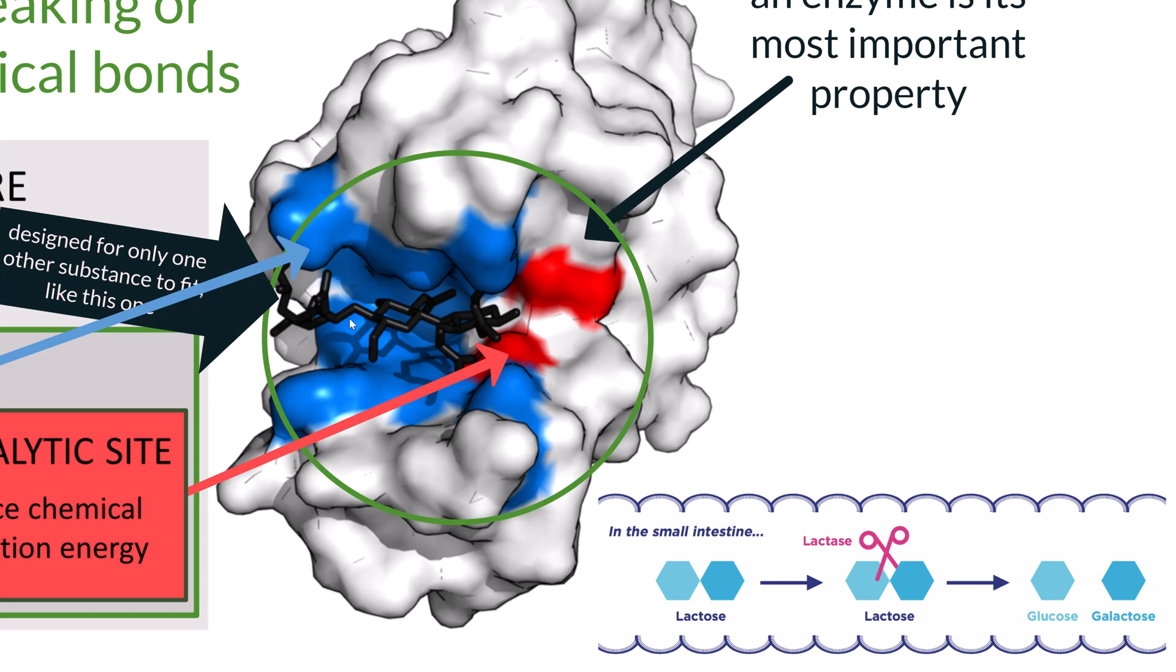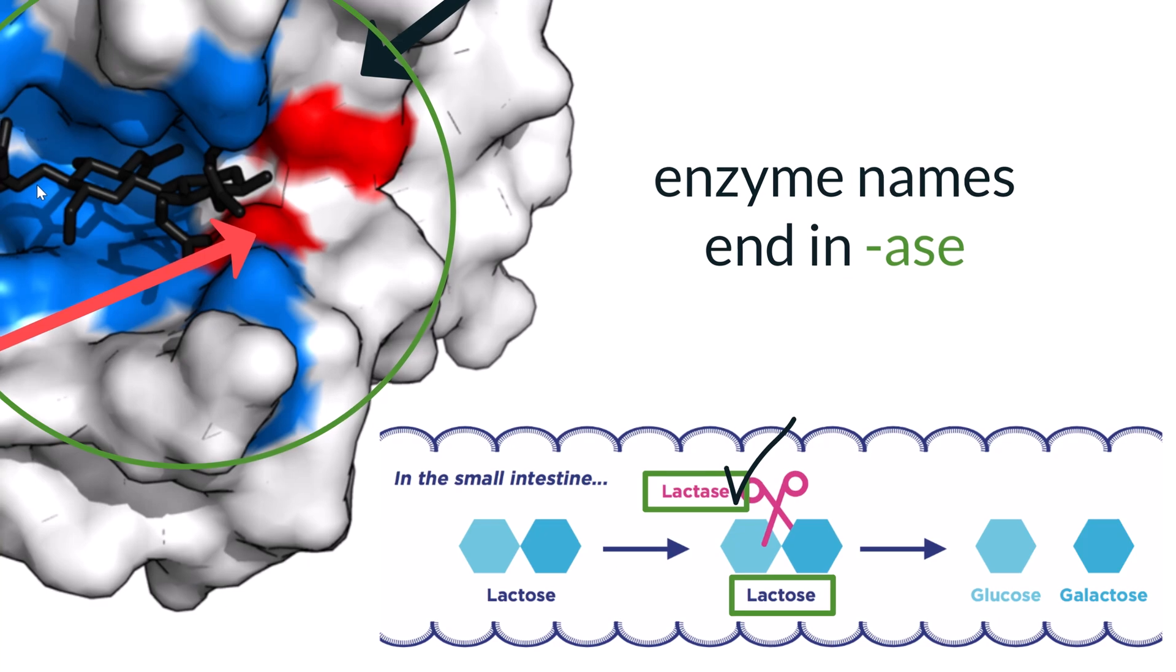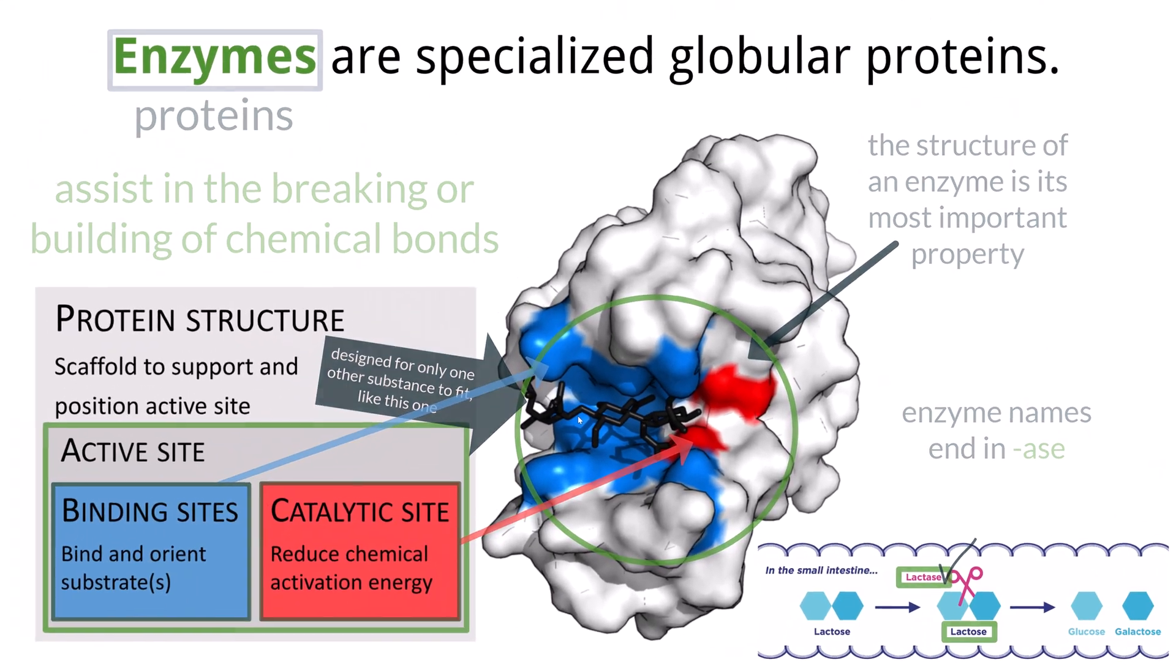Another small point to know is that enzyme names generally end in ASE. So if you see these terms lactose versus lactase, you can easily identify that lactase is the enzyme, and actually functions to break down the disaccharide lactose. Let's dive into more detail about the structure of enzymes and how they function.